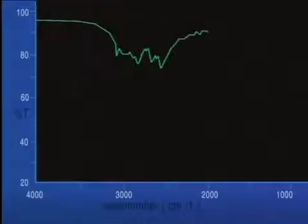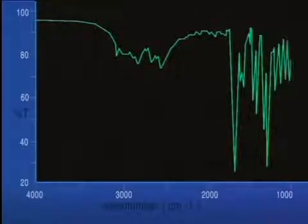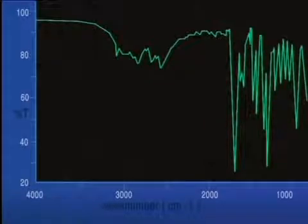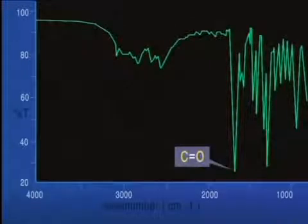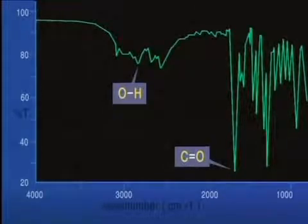The wave numbers of the more significant peaks can be labelled onto the spectrum. This helps the chemists to interpret the data. This peak is caused by a stretching vibration of the C double bond O, and this by an OH stretch. These two peaks together suggest that the sample may have a carboxylic acid functional group, which has both C double bond O and OH bonds.